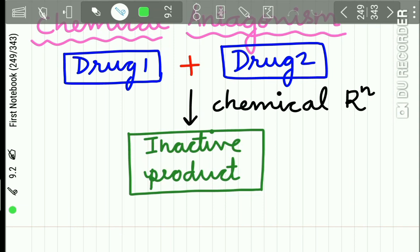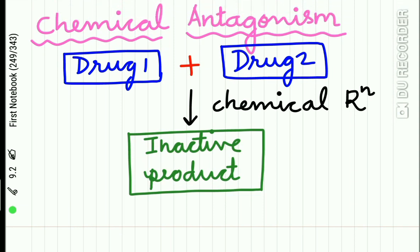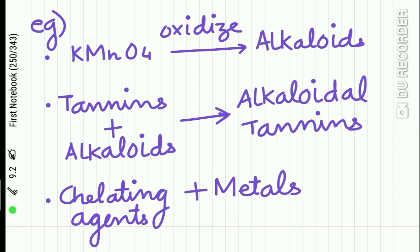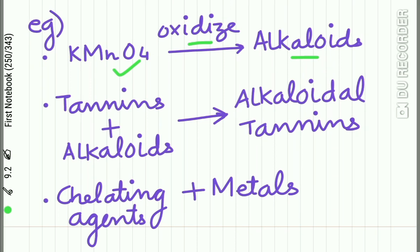The second type is chemical antagonism, where two drugs react chemically with each other to form an inactive product. Examples include potassium permanganate, which oxidizes alkaloids and is used in gastric lavage; tannins and alkaloids, which react to form alkaloidal tannates; and chelating agents, which react with metals.